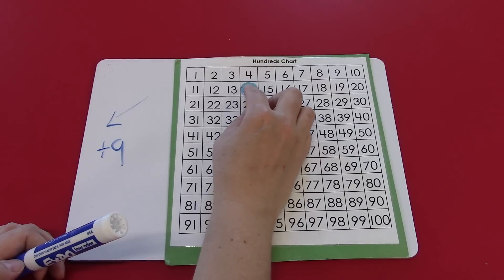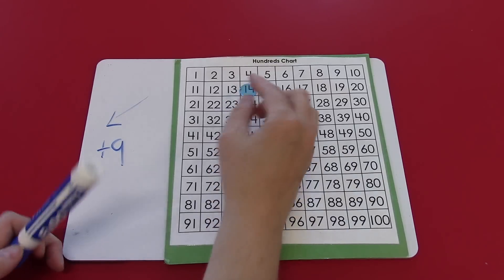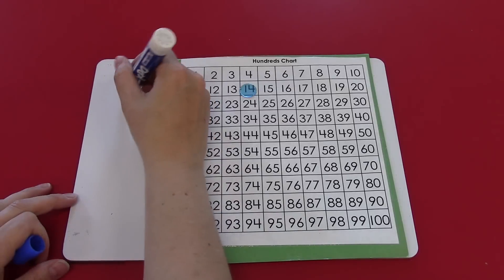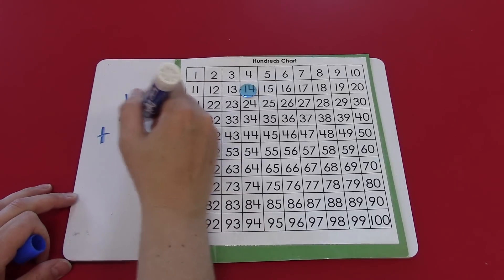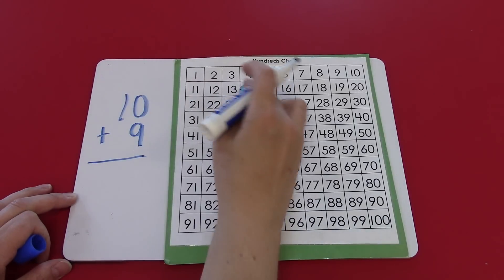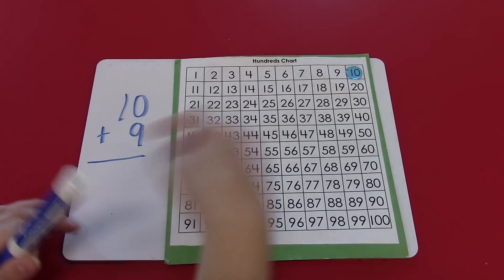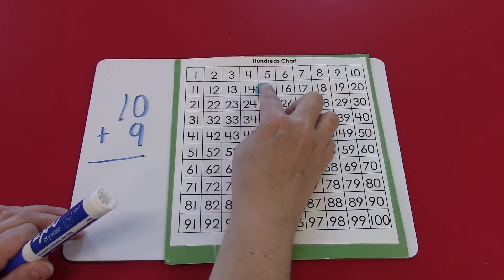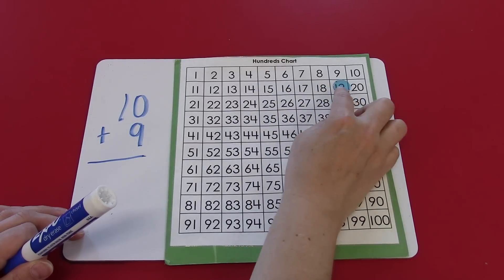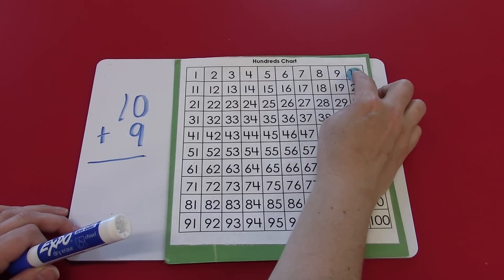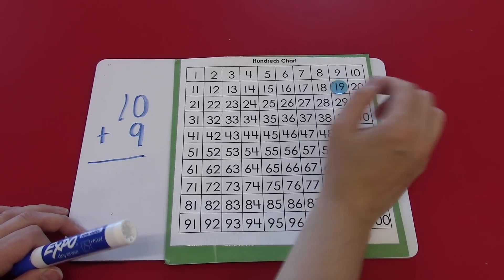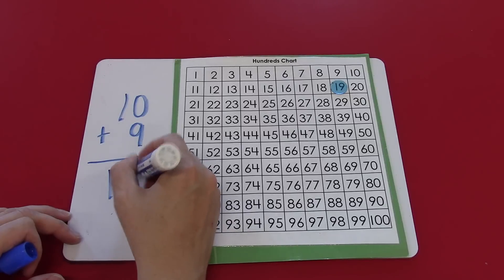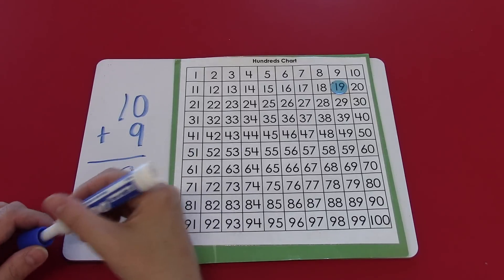So let's try that. Diagonally to the left, adding 9. 10 plus 9. Start at the 10. I could count on 1, 2, 3, 4, 5, 6, 7, 8, 9. Or I could remember the rule diagonally to the left is plus 9. Both ways, both strategies get me to the same answer, 19.